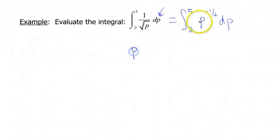So I'm going to add 1 to my power. So that gives me negative 1/2 plus 1, so that's a positive 1/2. And then I'm going to divide by that number, so I'm dividing by 1/2. And that's my antiderivative. Again, I know this because if I do the derivative of this function, I'll get back to where I started.